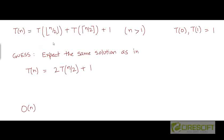Having clarified what the ceiling operator means, let's now try to come up with a reasonable guess for what a solution to this recurrence could potentially look like. One way to come up with a guess is to assume that for large values of n, it's not going to make a difference whether or not we have the floor and ceiling operators inside the recurrence.